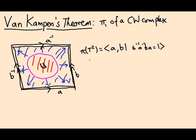In the previous video, we saw the statement of Van Kampen's theorem, which allows you to compute fundamental groups of spaces by breaking them into smaller, simpler spaces. We saw a bunch of examples, finishing with this example of the two-dimensional torus, which gave us this fundamental group: two generators and one relation.